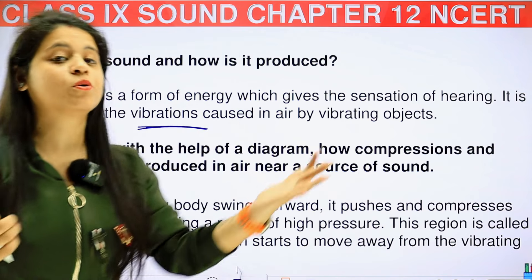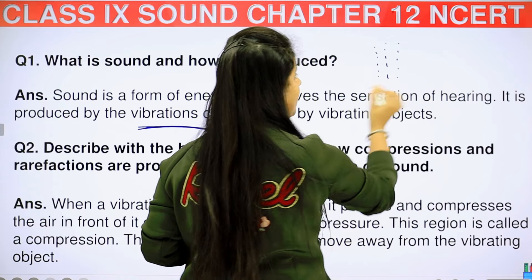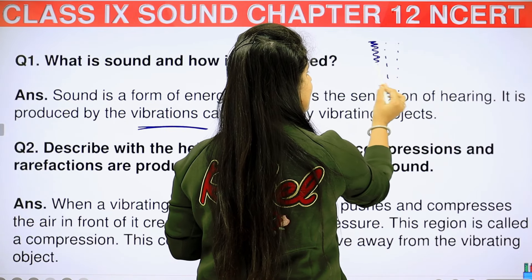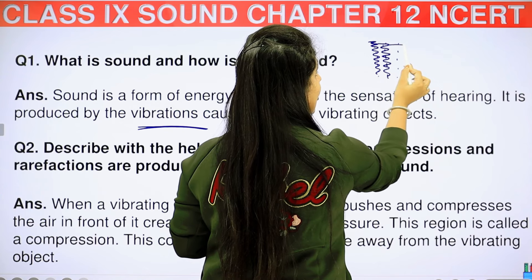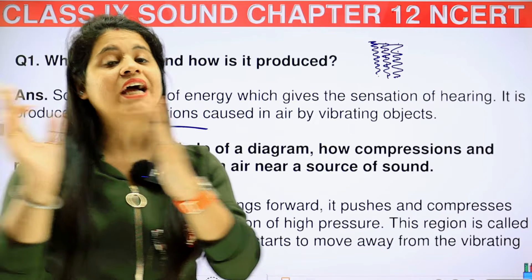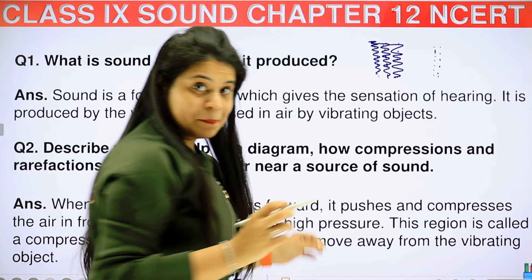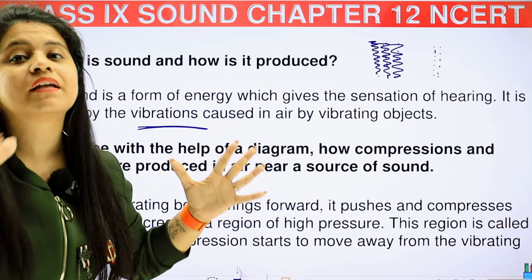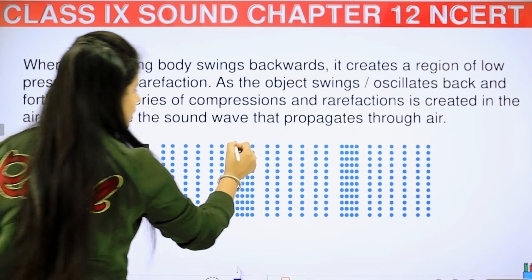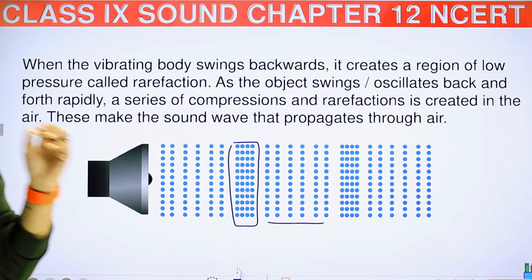When someone produces a sound, the air particles start to vibrate — they vibrate in a to-and-fro motion. As you can see in the diagram, this area that is created is the region of compression, and where there is a gap, that is the region of rarefaction.